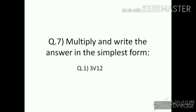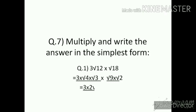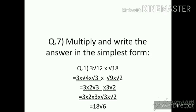Question number 7 — Multiply and write the answer in simplest form. First: √12 × √18. Split 12 as 4 × 3, and 18 as 9 × 2. So: √4 × √3 × √9 × √2. 4 is a perfect square giving 2, and 9 is a perfect square giving 3. So: 2 × 3 × √3 × √2 = 6√6.